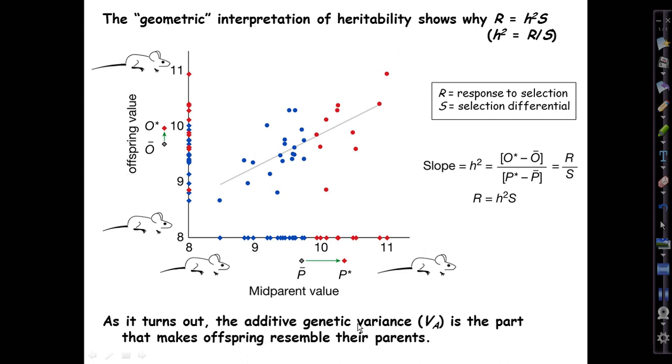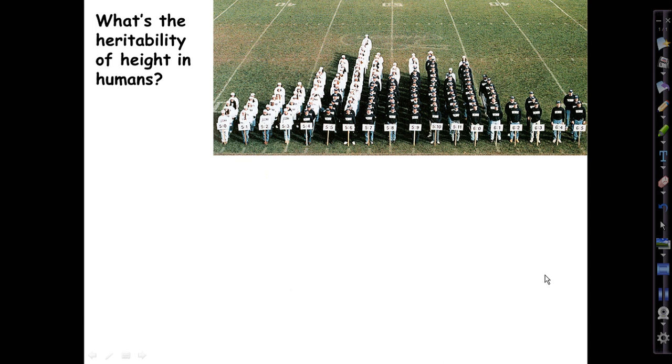So the narrow-sense heritability was immediately understood to be important by breeders because it predicts the extent, it predicts the size of the response that as a breeder you will get for selection of a given strength on a trait in that population. And it is the additive variance that accounts for the resemblance of offspring to their parents, and thereby, in the very same way, accounts for the response to selection.